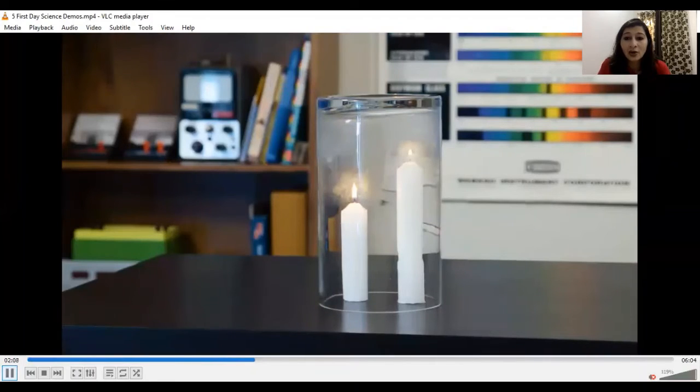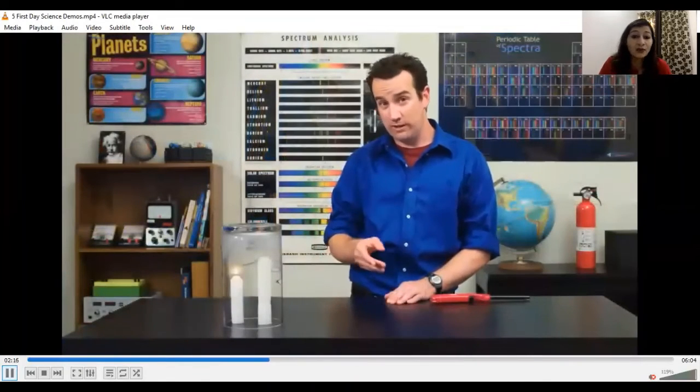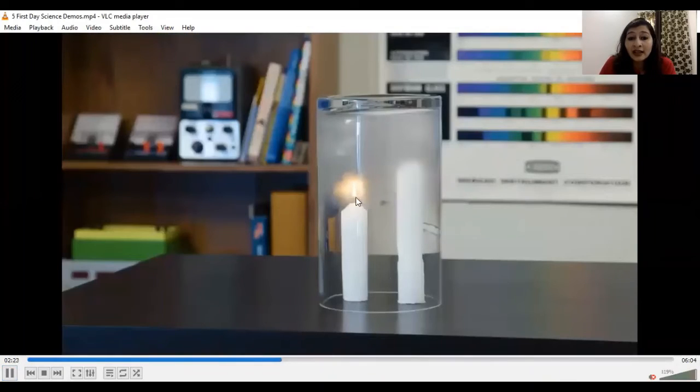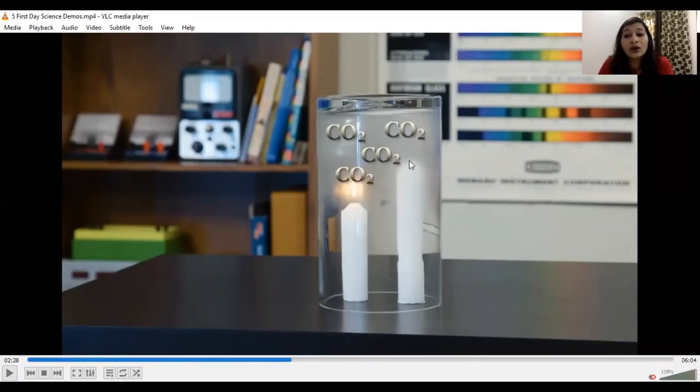Yes, now here we can see the taller one has blown out first. And why is it so? The shorter candle is burning and has produced a lot of carbon dioxide which will not favor the fire. So when the accumulation of carbon dioxide is taking place, the taller candle will blow out first. And why is carbon dioxide moving up? Because the heat is being produced and we know that when carbon dioxide is produced, it always moves in upward direction. So here we have a lot of accumulation of carbon dioxide. That's why our taller candle has blown out.